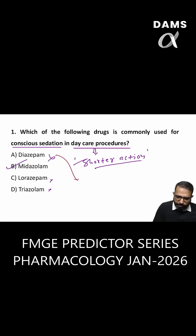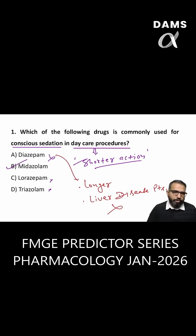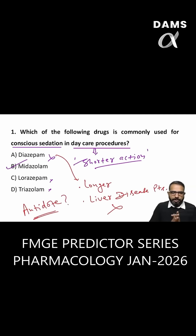Don't forget: diazepam is a very long-acting drug and is not safe in liver disease patients. Also, diazepam overdose or benzodiazepine overdose antidote is a frequently asked question — what is the name of the antidote used for benzodiazepine poisoning?